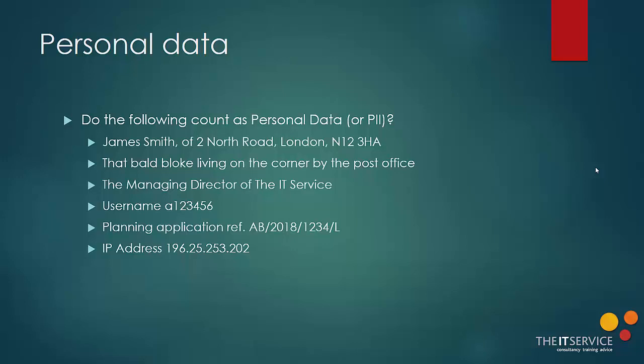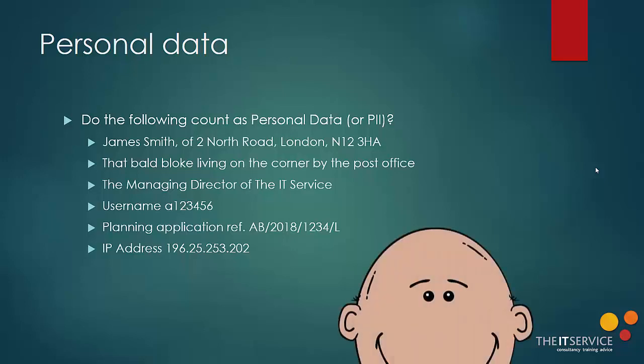But what about the next one: 'that bald bloke living on the corner by the post office'? Well yes — think about the definition we covered earlier. We said that it included physical, physiological and genetic information, and location data for that matter. That's what that description amounts to. The point of that sentence would be to describe someone — in other words, it's something which directly or indirectly identifies someone.